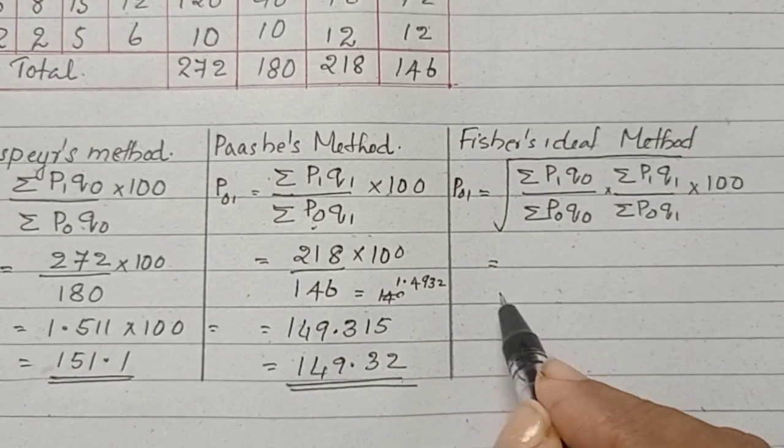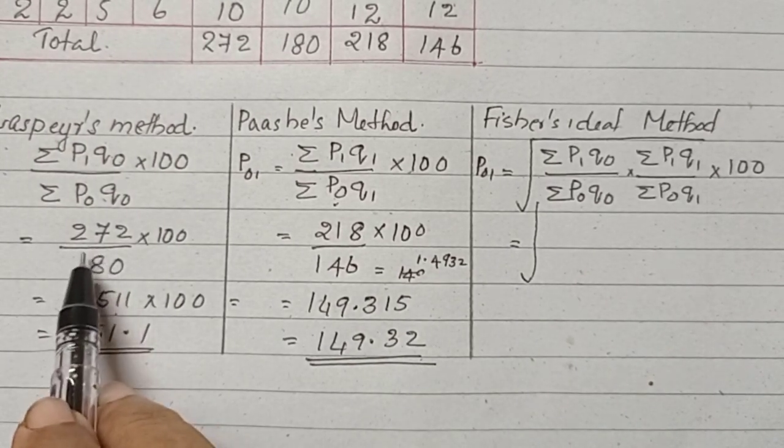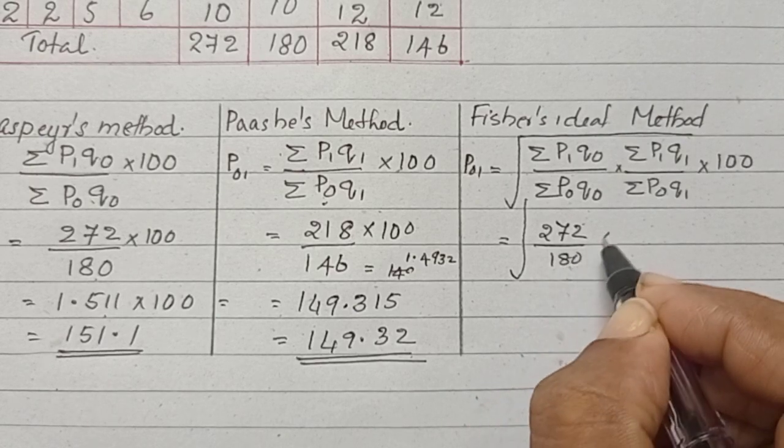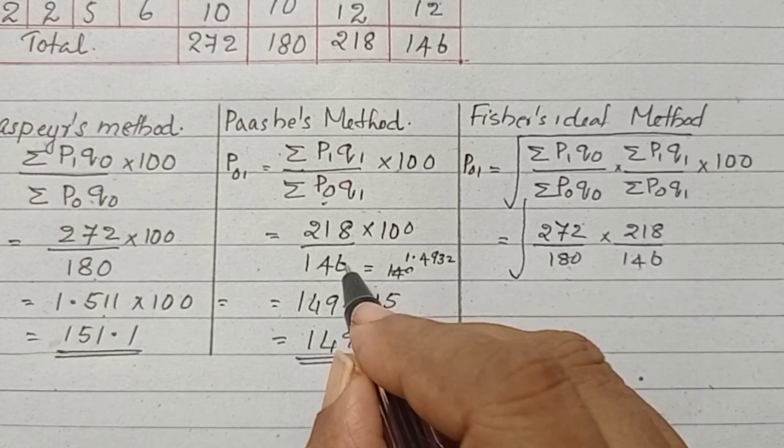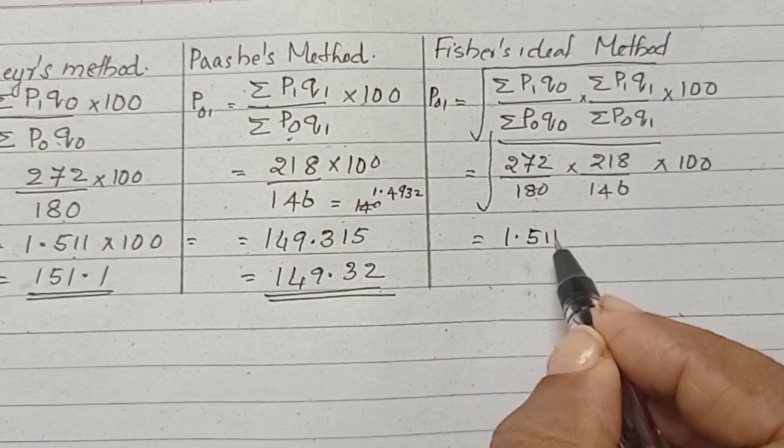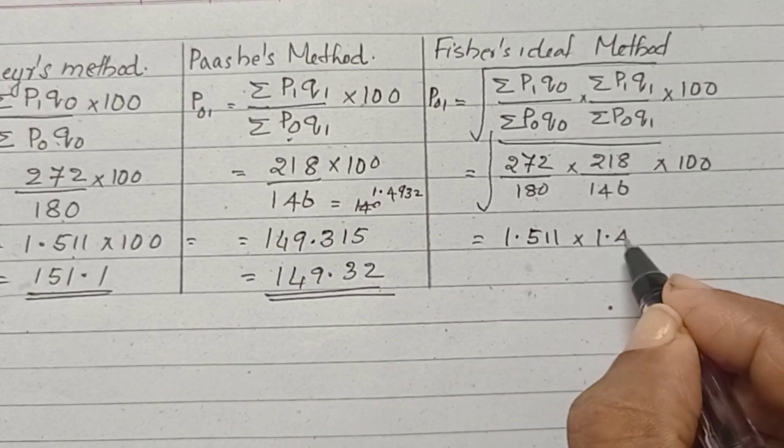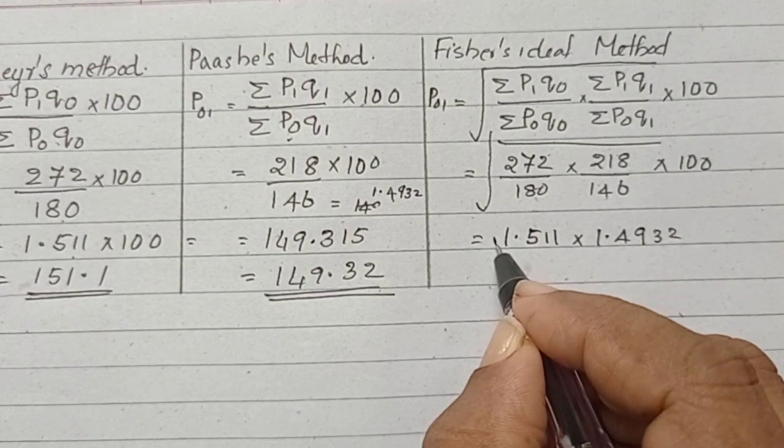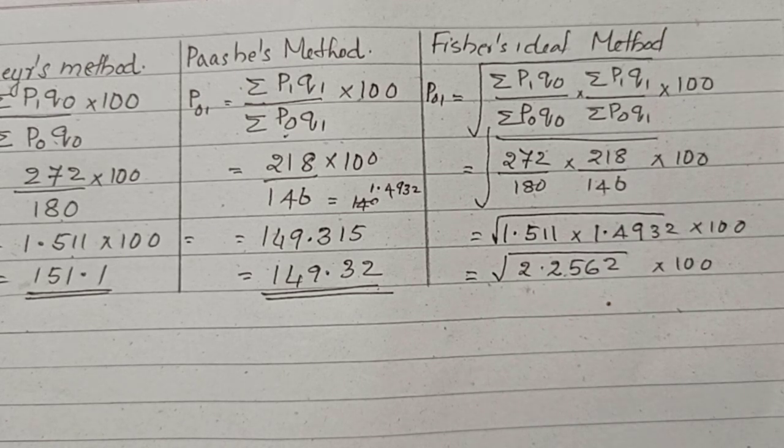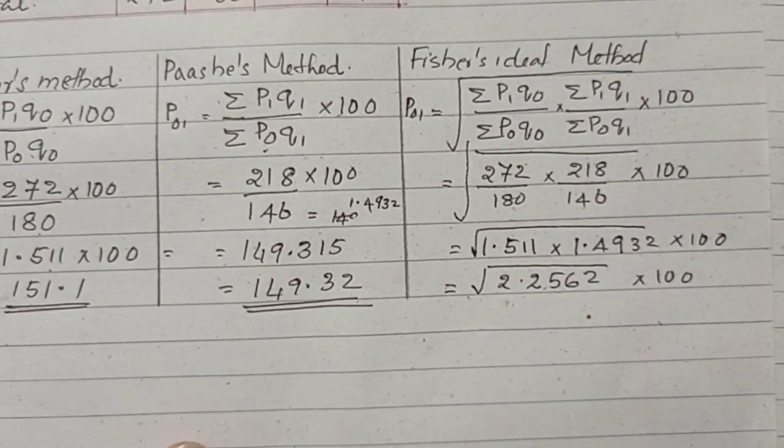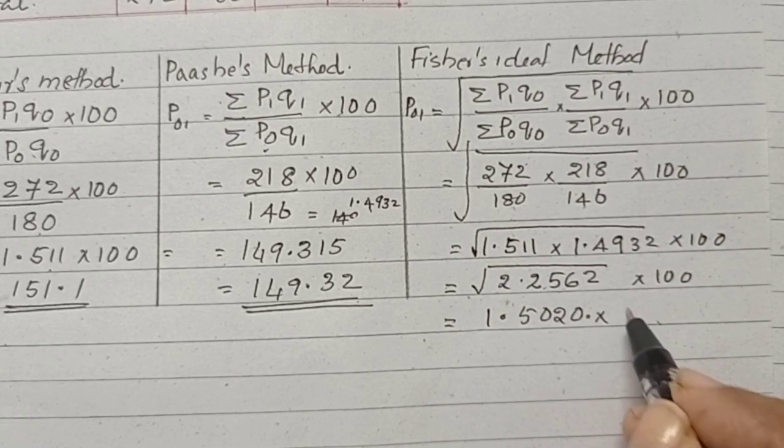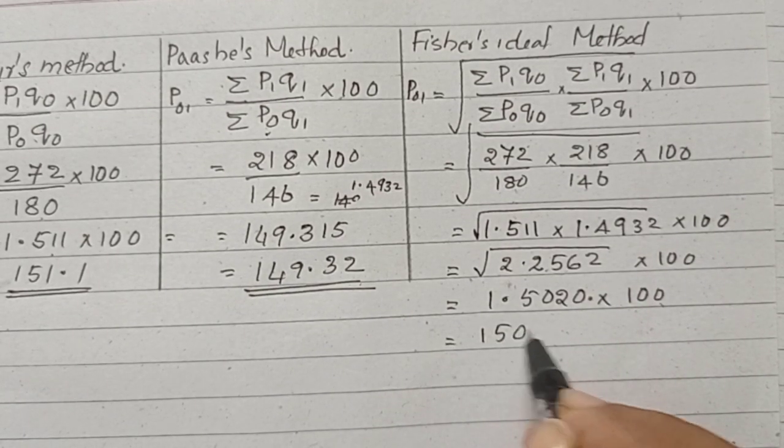The answer will be square root of 272 divided by 180 into 218 divided by 146 into 100. Its answer is 1.511 into 1.4932, the root into 100. It is equal to square root of 2.2562 into 100, which equals 1.5020 into 100, equal to 150.20.